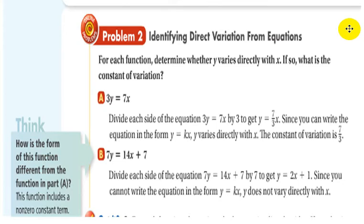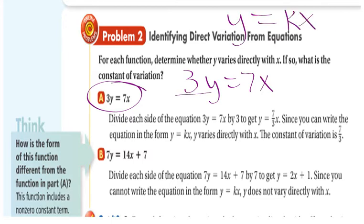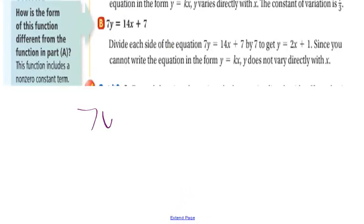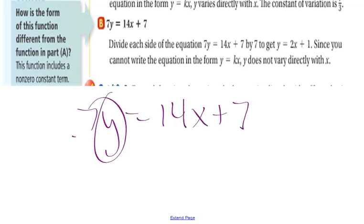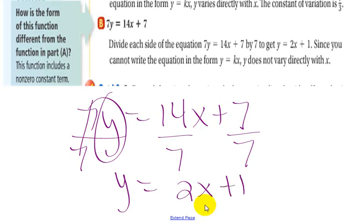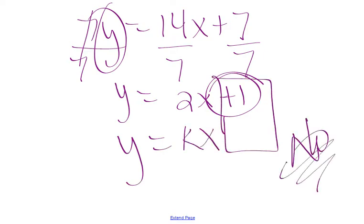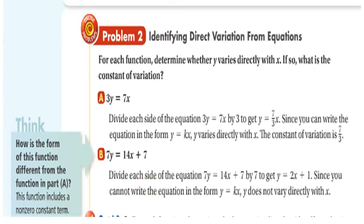Our next problems are identifying direct variation from equations. So, it's more of the same of what we just did. I've got 3y equals 7x. So, again, I've got to get it to look like y equals kx. So, divide both sides by 3. And I get that y equals 7 thirds x. So, yes, this is a direct variation. And my k value equals 7 thirds. B, so we've got 7y equals 14x plus 7. Well, I'm isolating my y. So, divide everything by 7. And I get y equals 2x plus 1. Because of the plus 1, that's something extra. That doesn't look like y equals kx. It's got something extra. So, no, this is not a direct variation. And that was it for direct variation.